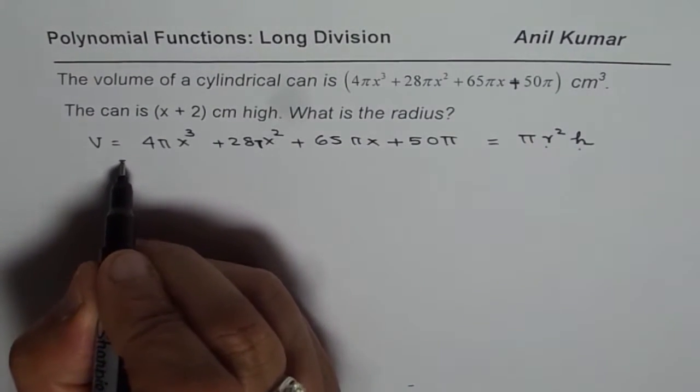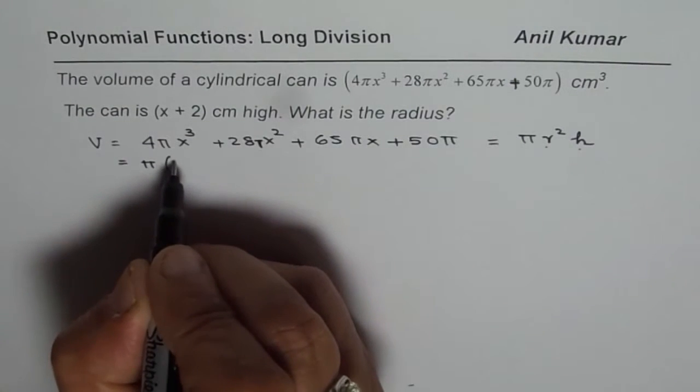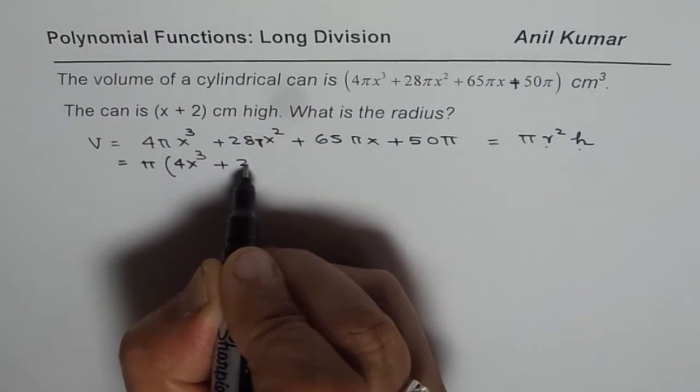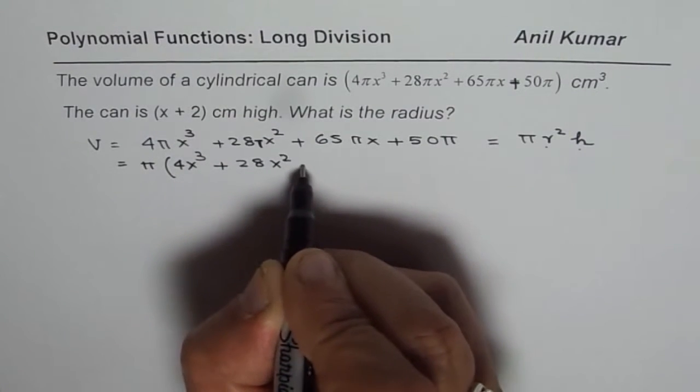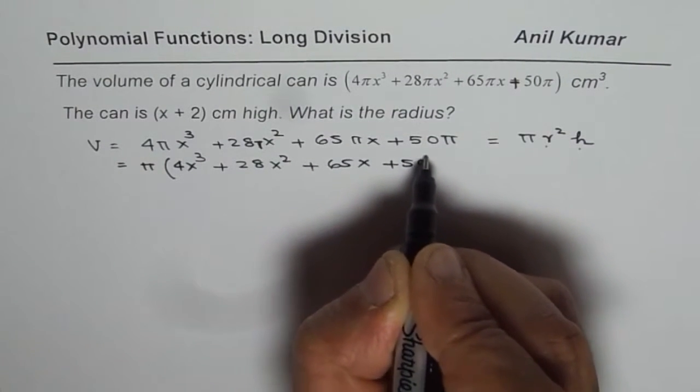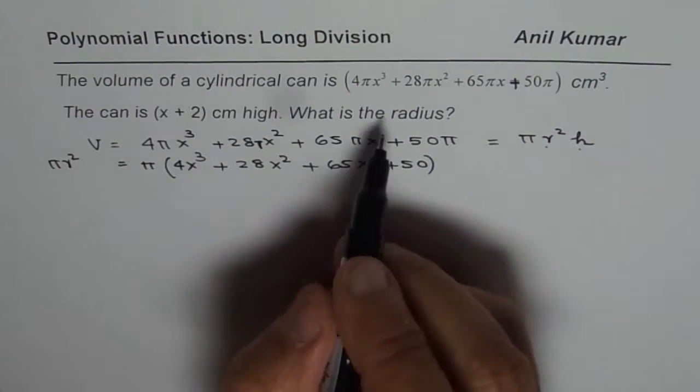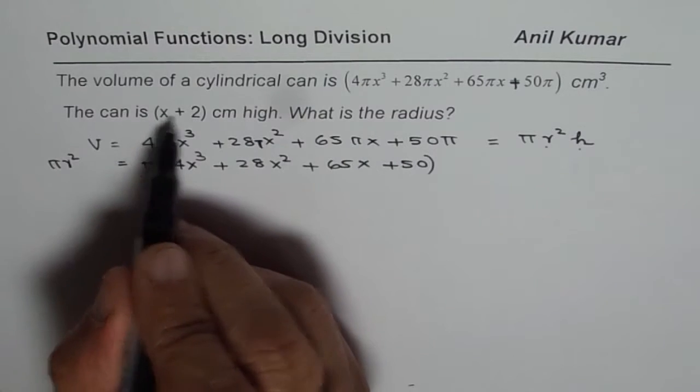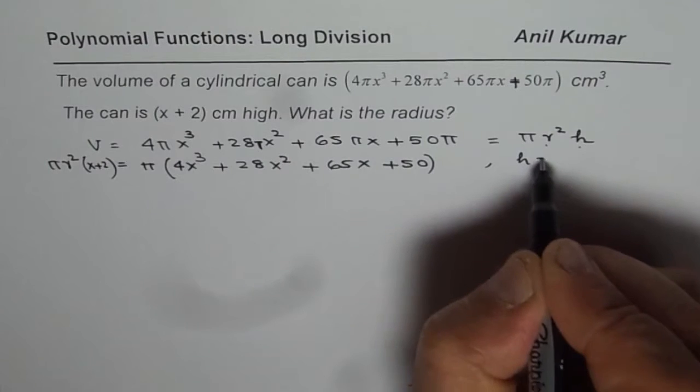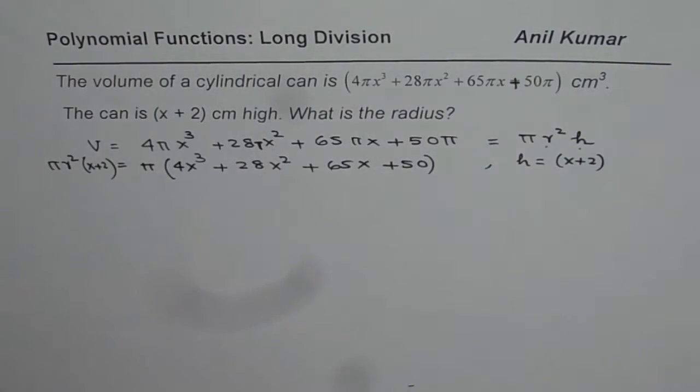So let me rewrite this equation. I will factor π, so we get 4x³ + 28x² + 65x + 50 equals πr² and h is given to us as x + 2. We know that h equals x + 2. We need to find what r is.